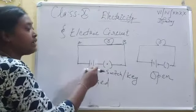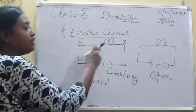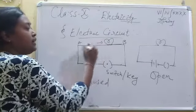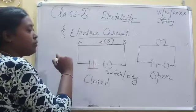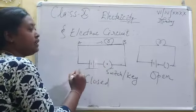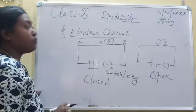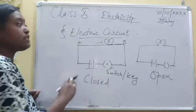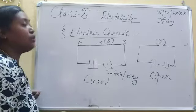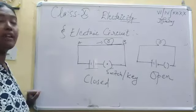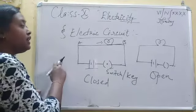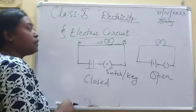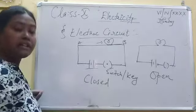In the electric circuit you have seen that there are many symbols or representations. Here it is bulb, this is the cell or battery, this is the key. Some electrical components are essential to make an electric circuit. The electric circuit is made by electrical components which are represented by some specific symbols. Now we will see the symbols or the electrical components used in the electrical circuit.